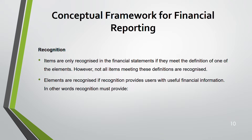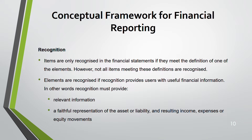Elements are recognized only if recognition provides users with useful financial information. Once an item is categorized as one of the five elements, you recognize it only if that recognition provides relevant information as well as faithful representation — the two fundamental characteristics of useful financial information. Even after meeting the definition of an element, an item may still not be recognized. For example, if it is an asset, you must ask: does it give relevant information? Does it faithfully represent an asset? If yes, you recognize it; if not, you stop — do not recognize.